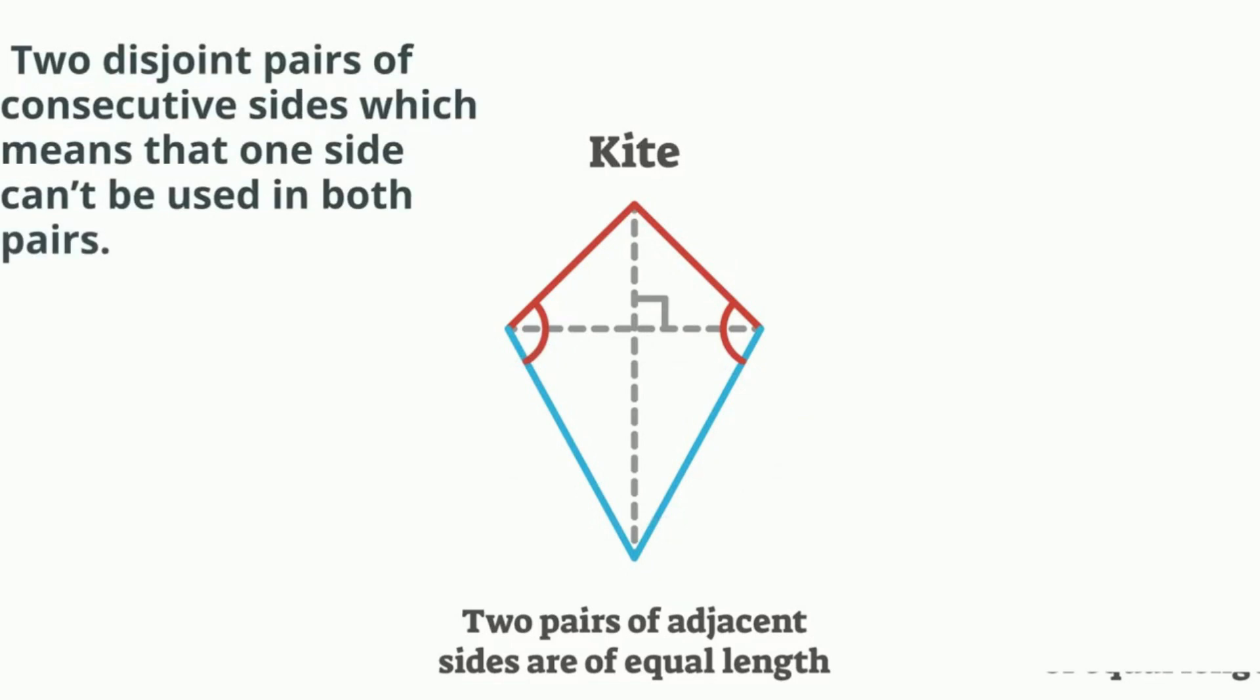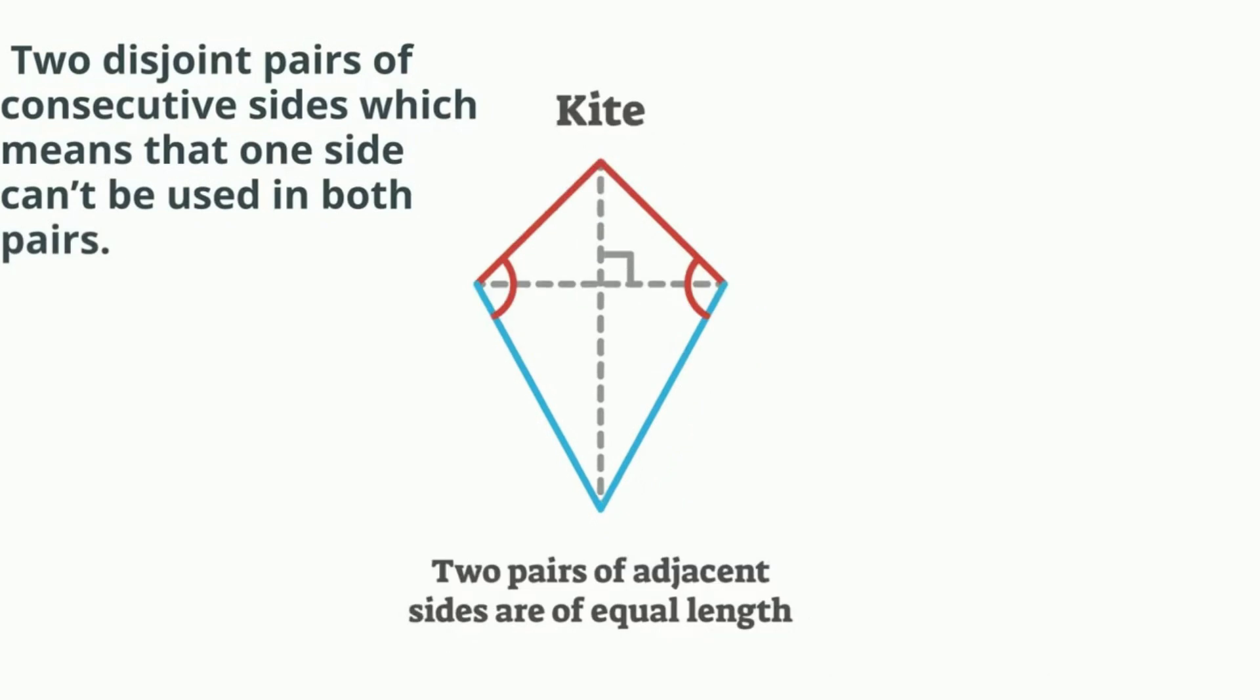Disjoint pairs means that one side can't be used in both pairs. The sides of each pair are congruent. Sides A and B are congruent, and sides C and D are congruent.